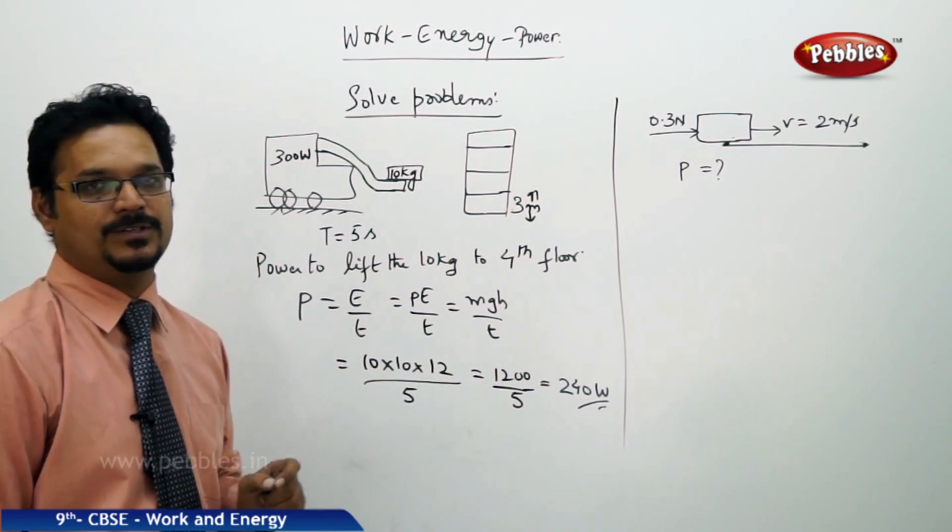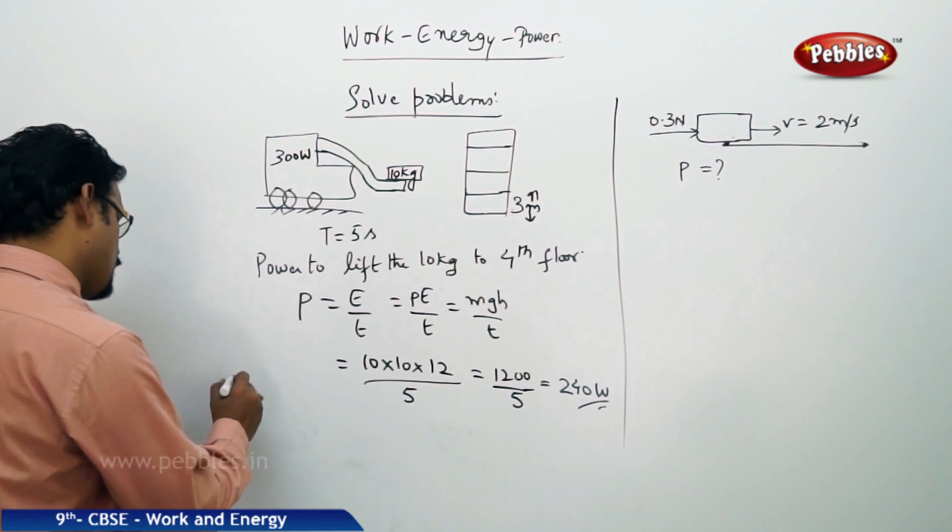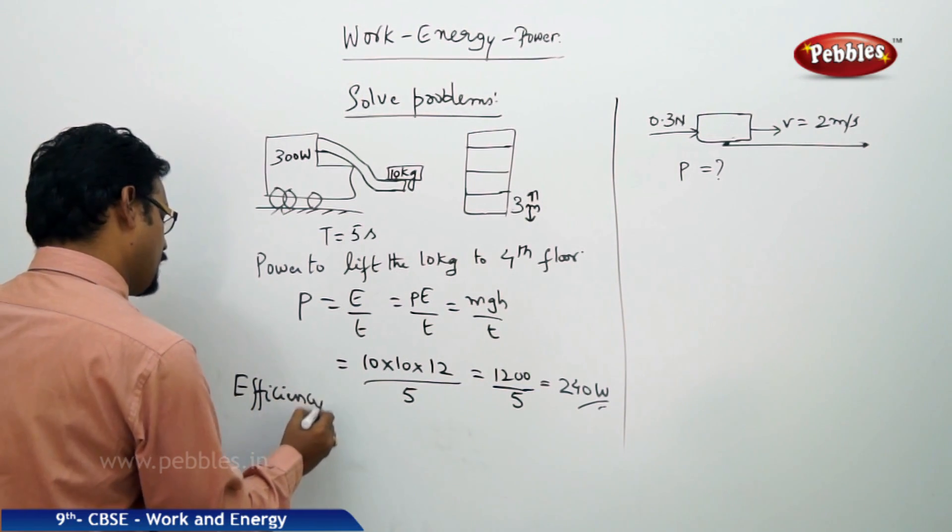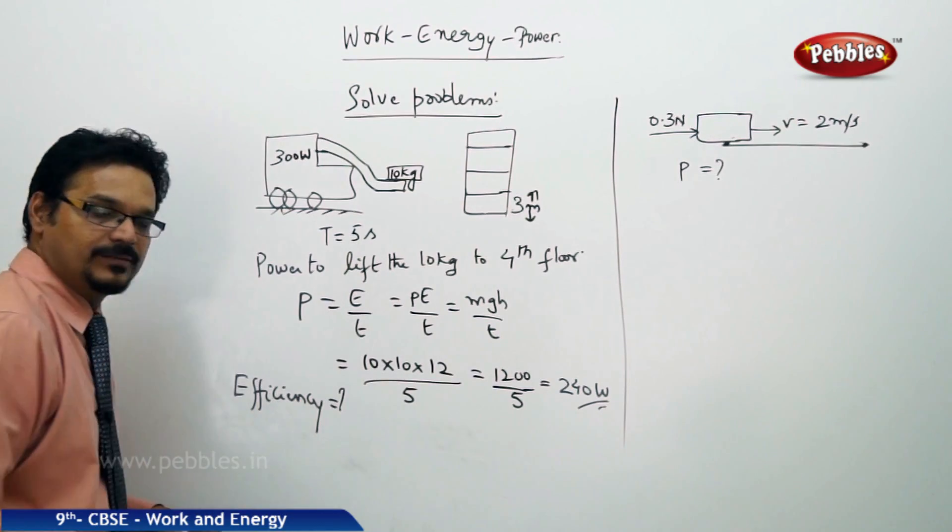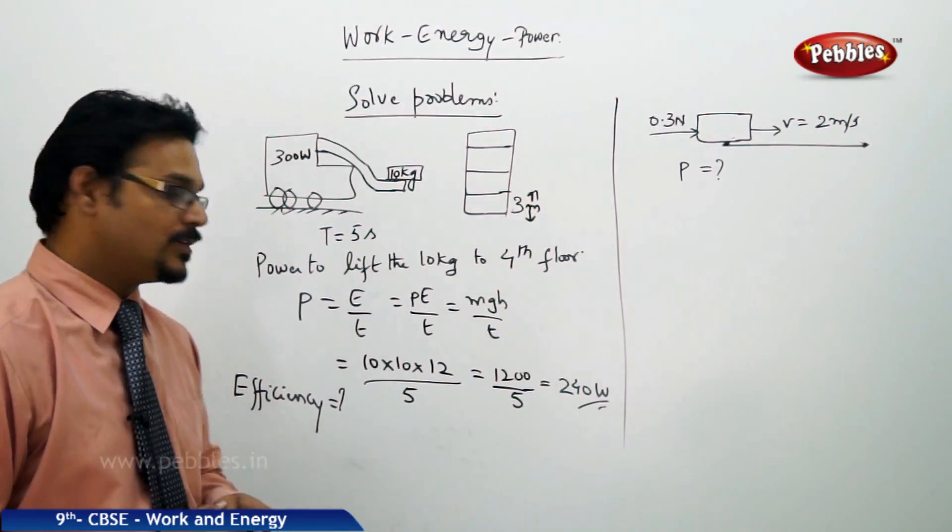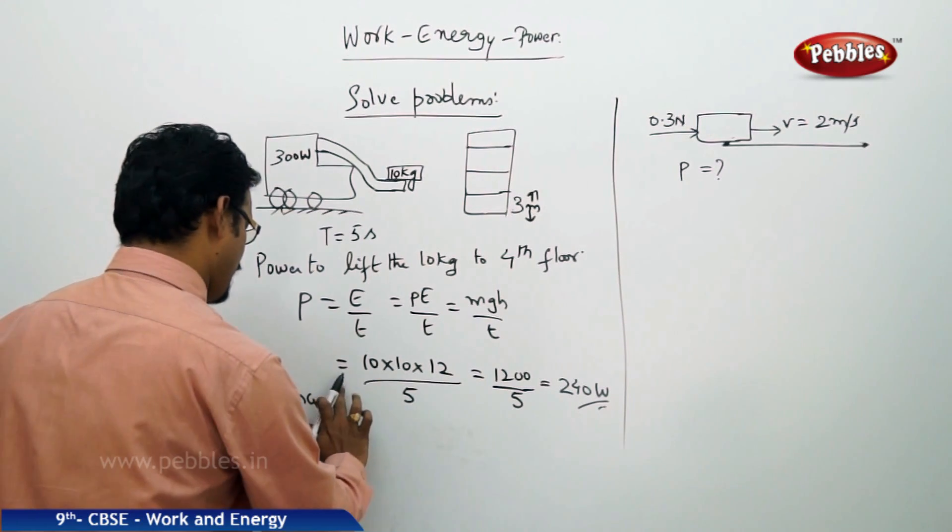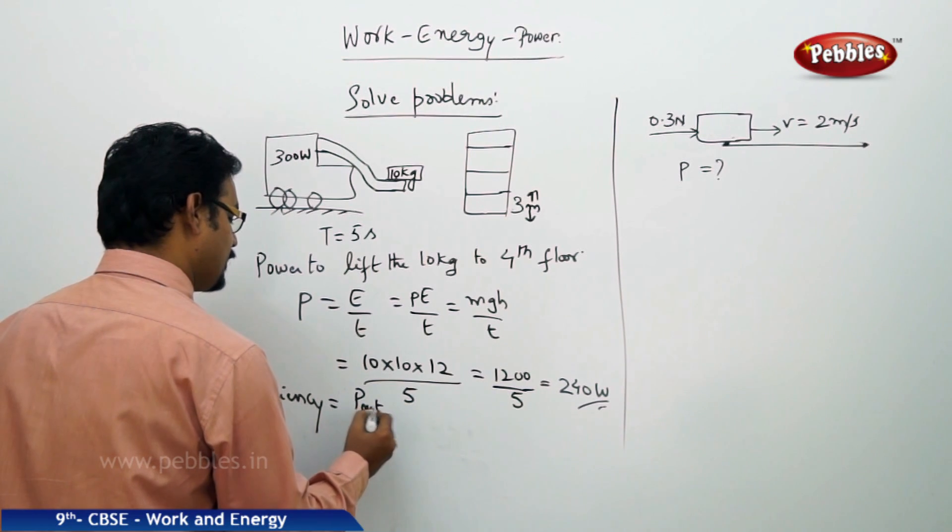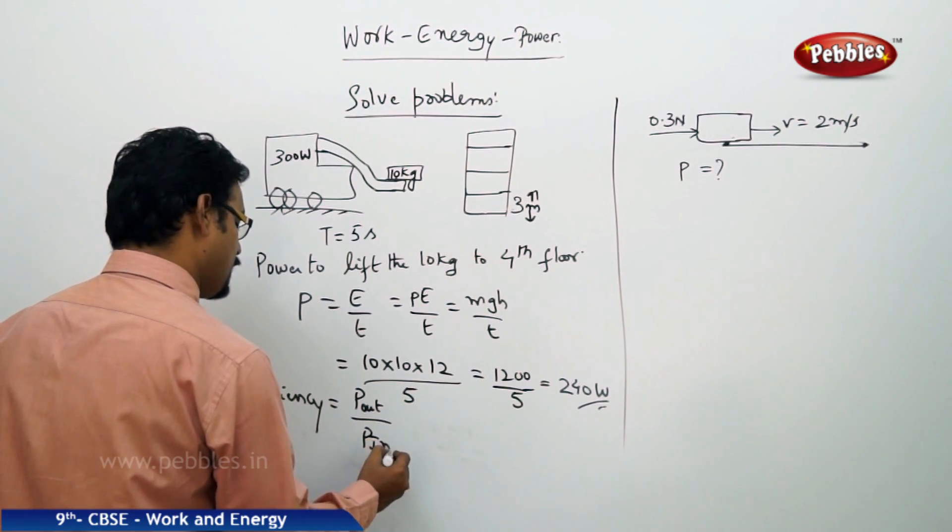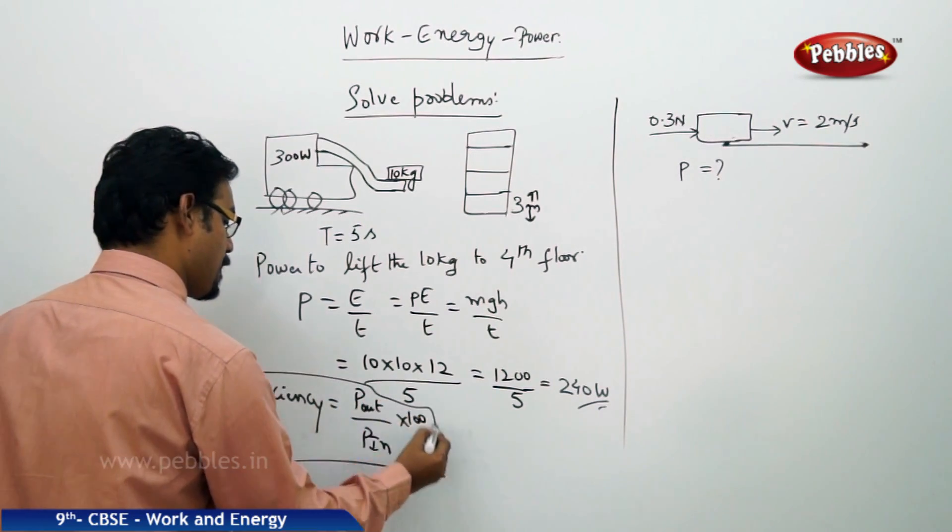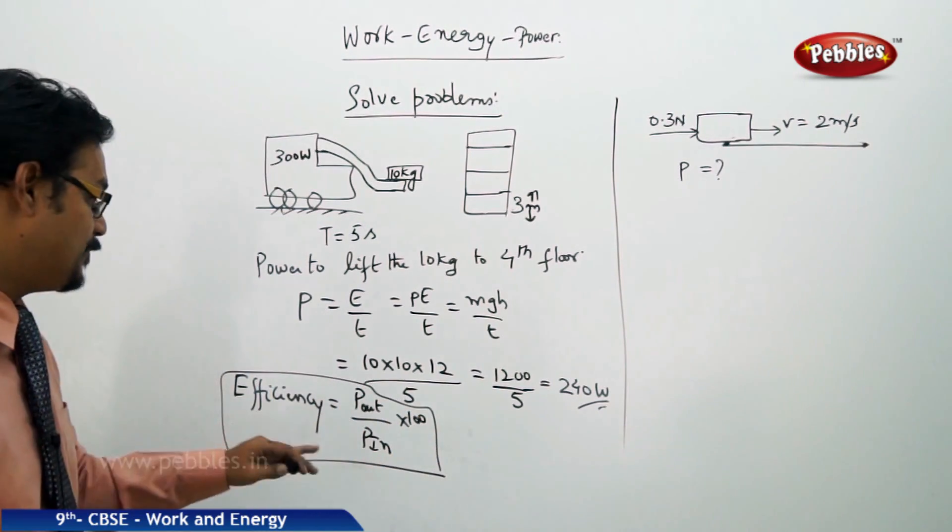Now here one more interesting question. If you ask what is the efficiency, what is the efficiency of the crane, how good it is, how do you find? Efficiency, if you want to find, the formula is output power by input power into 100. Remember this formula.